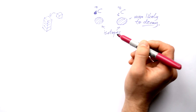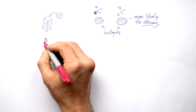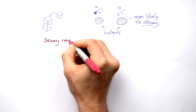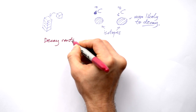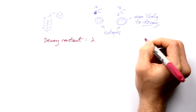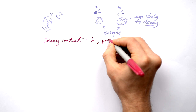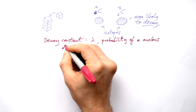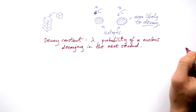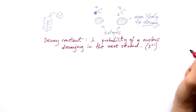Now at GCSE you don't need to know about this, but at A-level you do. We have something called the decay constant for an isotope, for a nucleus. That's given by the letter lambda — not wavelength in this case. That is the probability of a nucleus decaying in the next second, so its units are going to be s to the minus 1.